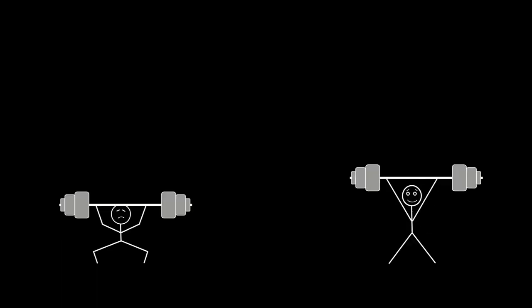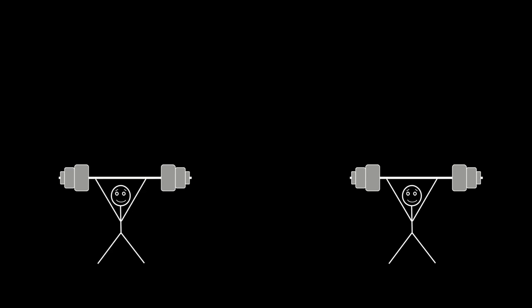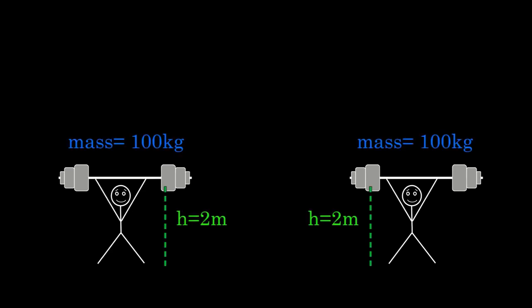Both weightlifters are giving their weights the same amount of gravitational potential energy. They both lift them 2 meters and the masses are 100 kilograms each. Plug those into the formula for gravitational potential energy and you find that the work done by each weightlifter is 1,960 joules.